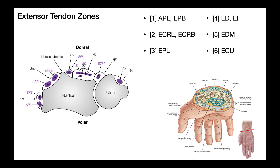That brings us to zone number five: extensor digiti minimi — that's the only one in the fifth zone. In the radial-ulnar cross section before crossing the wrist joint, the extensor digiti minimi tendon is actually between the radius and the ulna. In the more distal cross section, the extensor digiti minimi tendon is roughly between the hamate bone and the triquetrum.